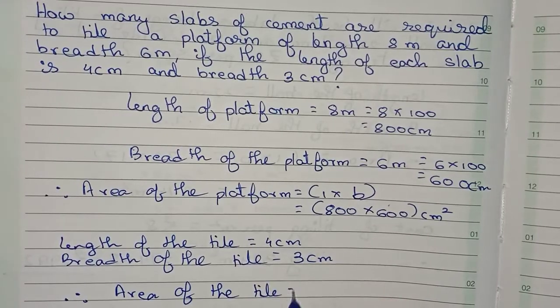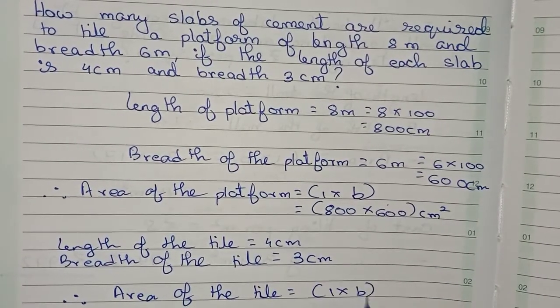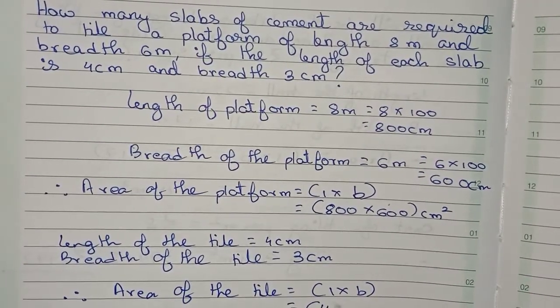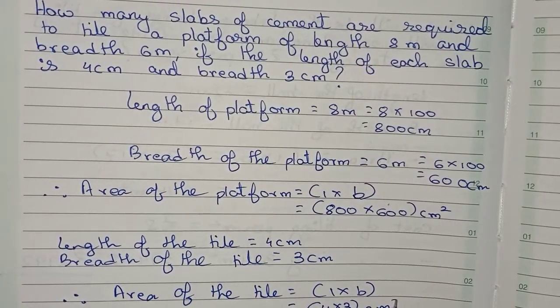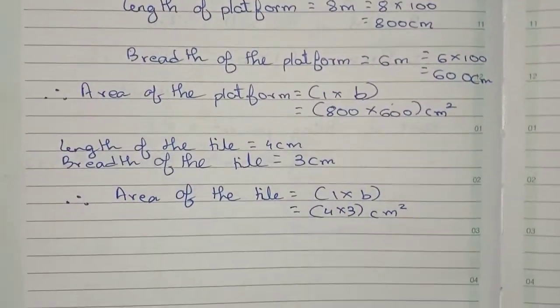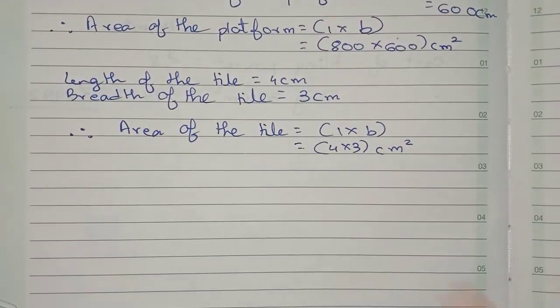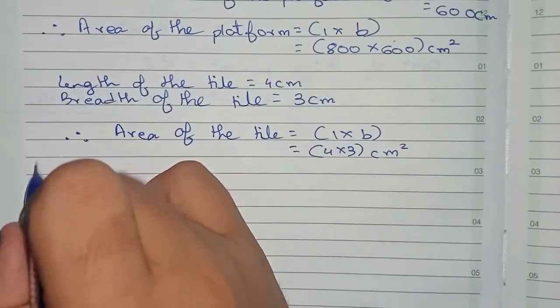Area of the tile equals length × breadth, which is 4 × 3 cm². So therefore,